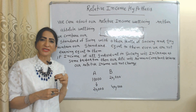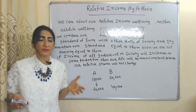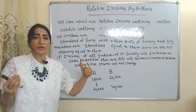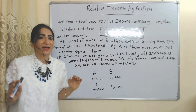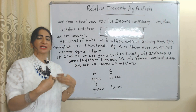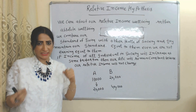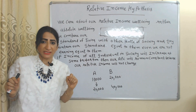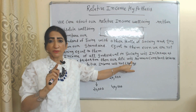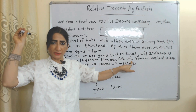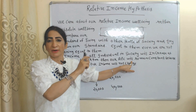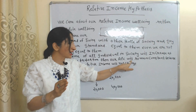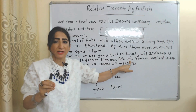Now we are going to talk about relative income hypothesis. According to this hypothesis, we care about our relative well-being rather than absolute well-being — we try to maintain our standard of living equal to other members of society, even if we are not earning equal to them. That's why if the income of all members of society increases at the same proportion, our APC will remain constant and will not fall, unlike the prediction of absolute income hypothesis.